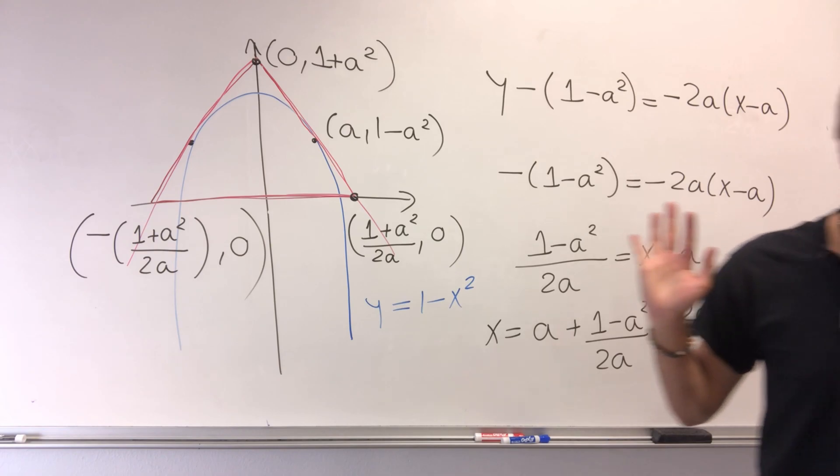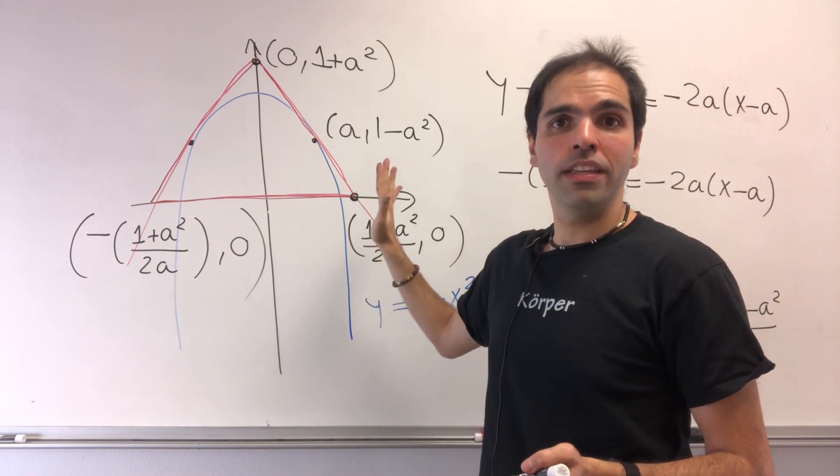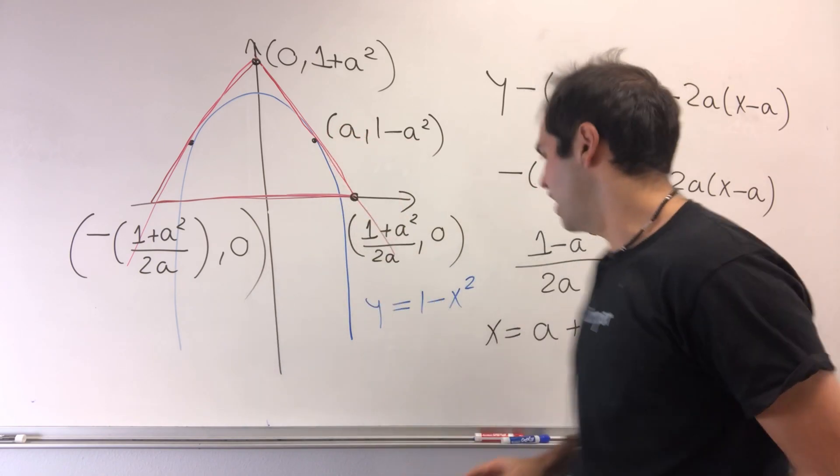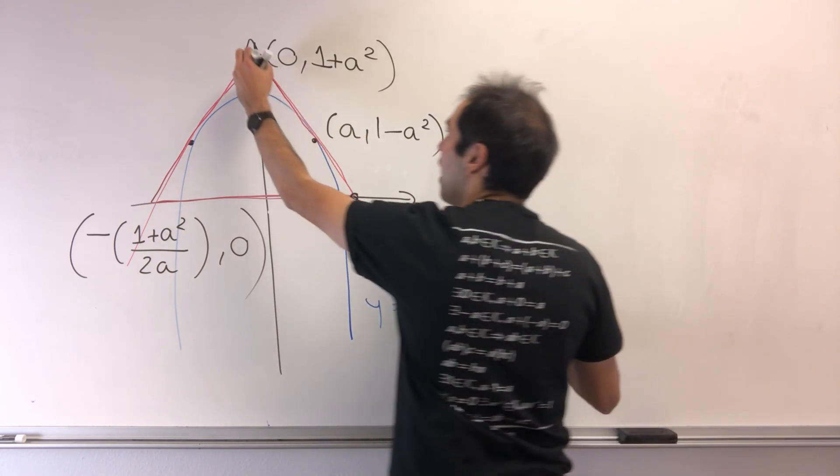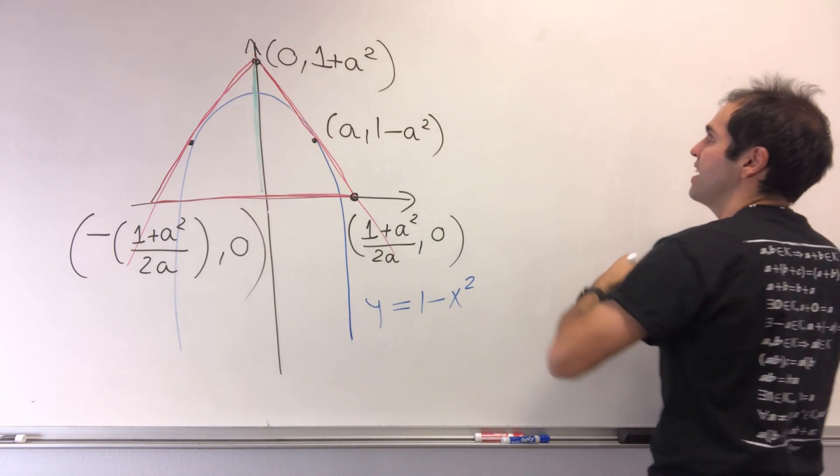And again, this is good because now we can simply determine the base of the triangle and the height. Okay, so first of all, what is the height of the triangle? Well, it's just 1 plus a squared.